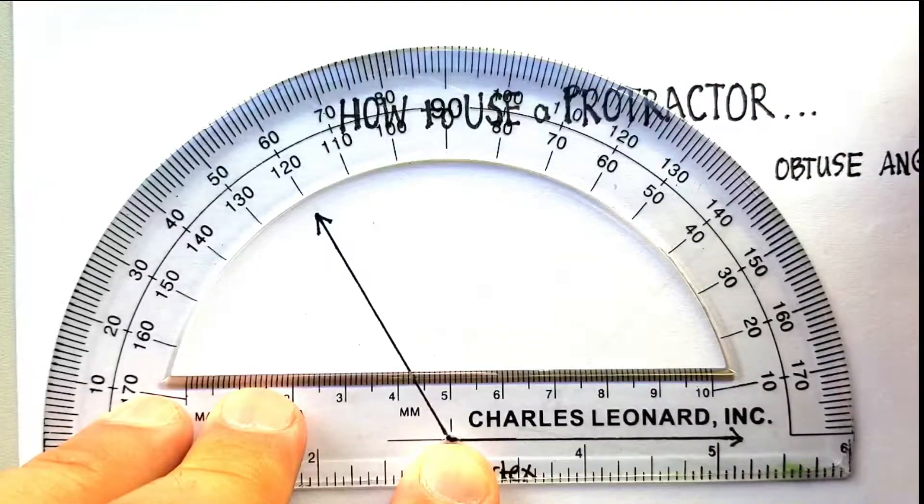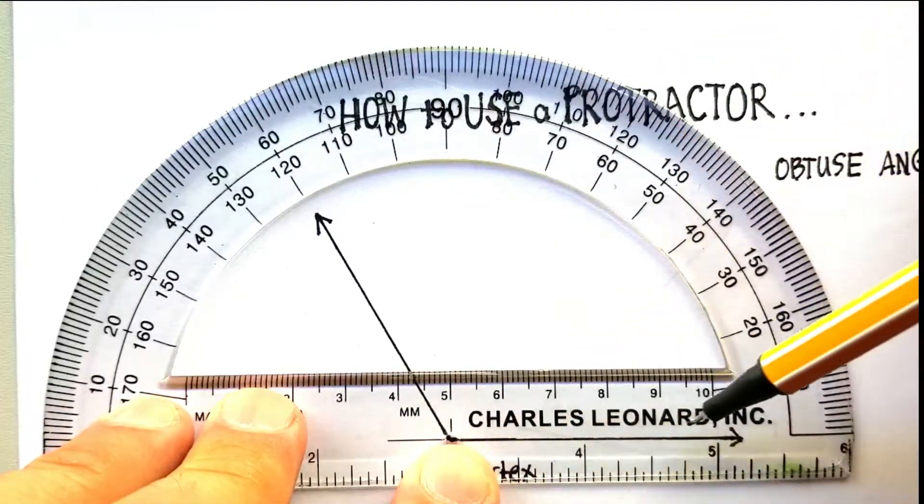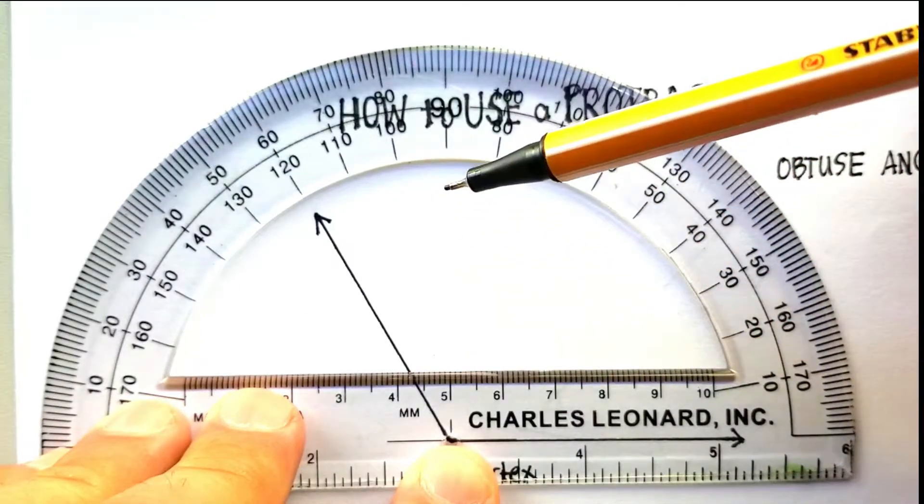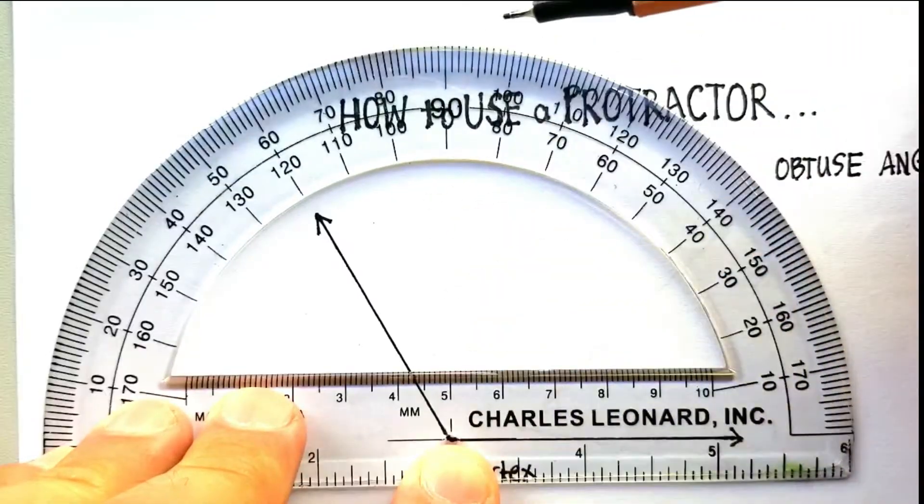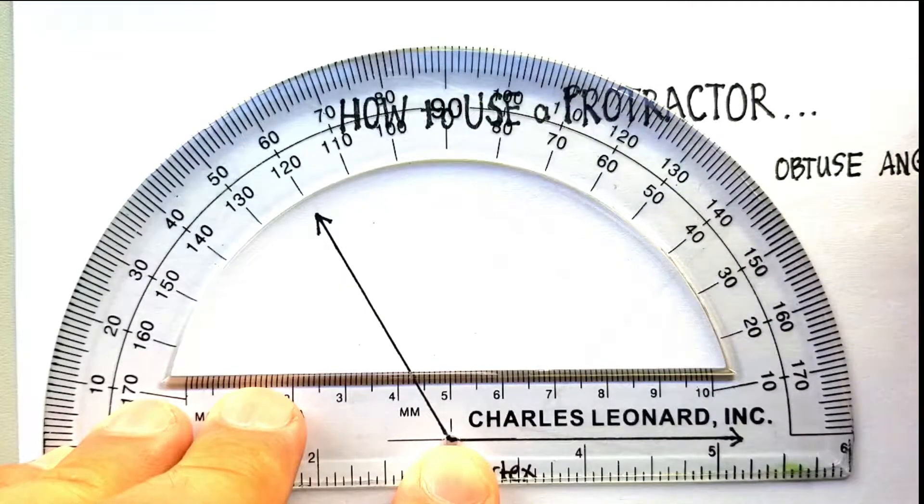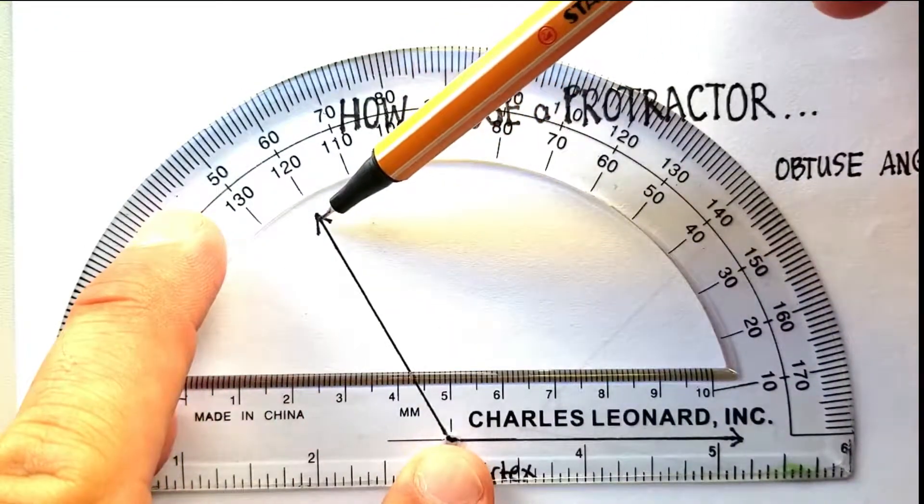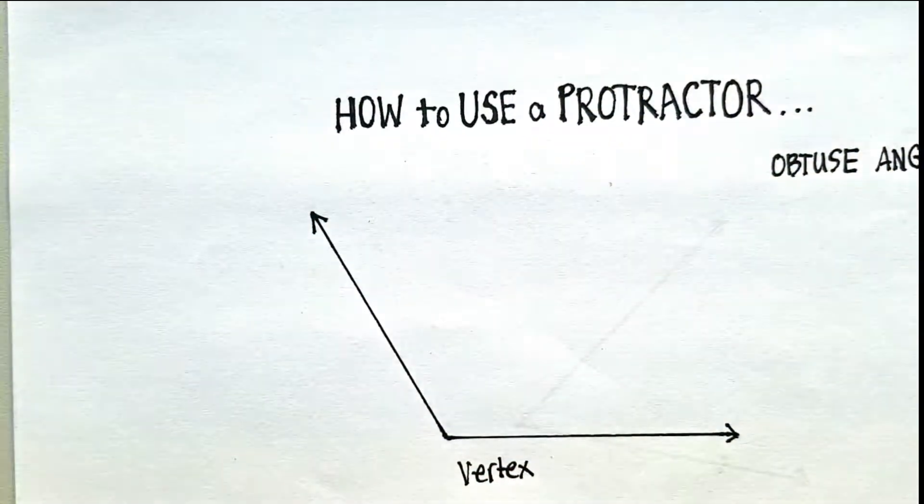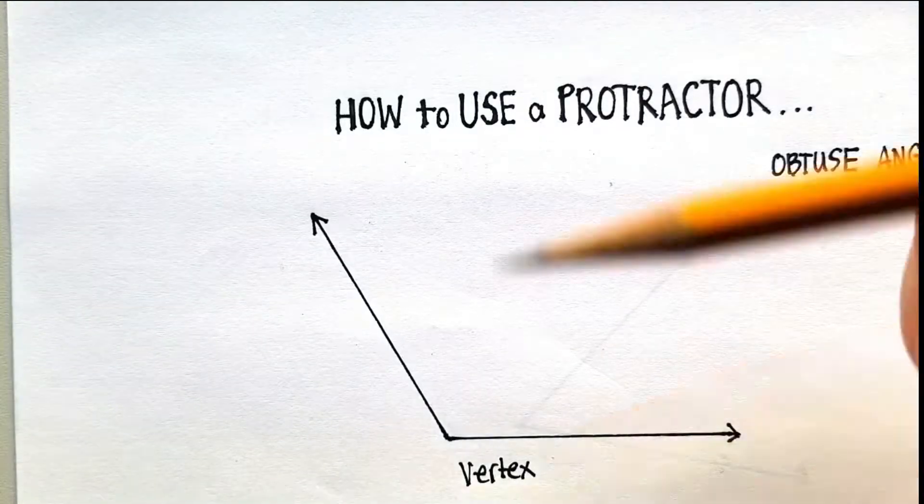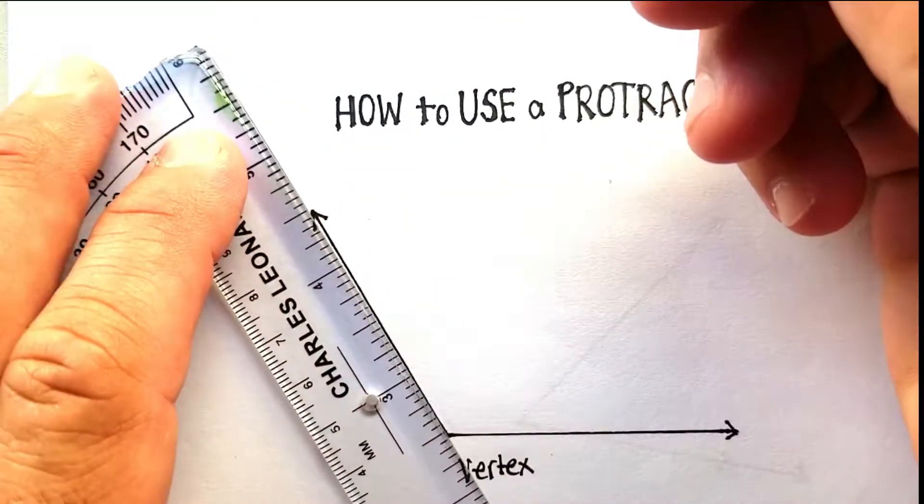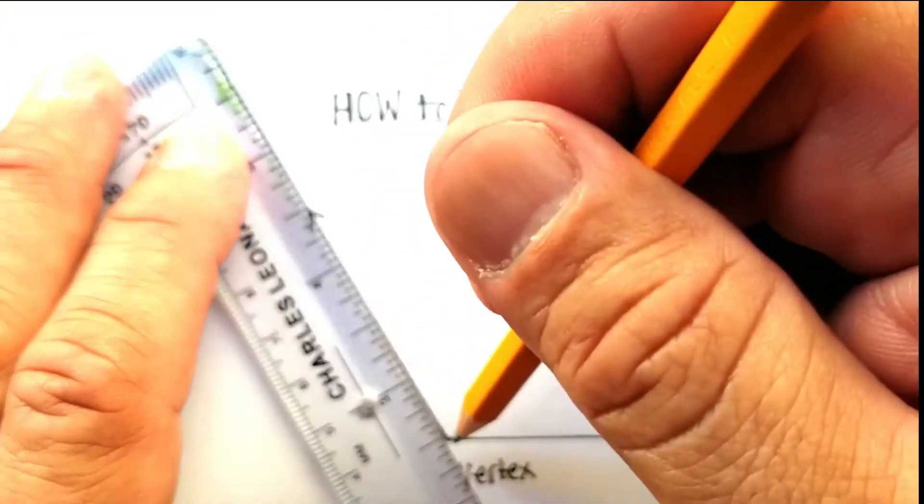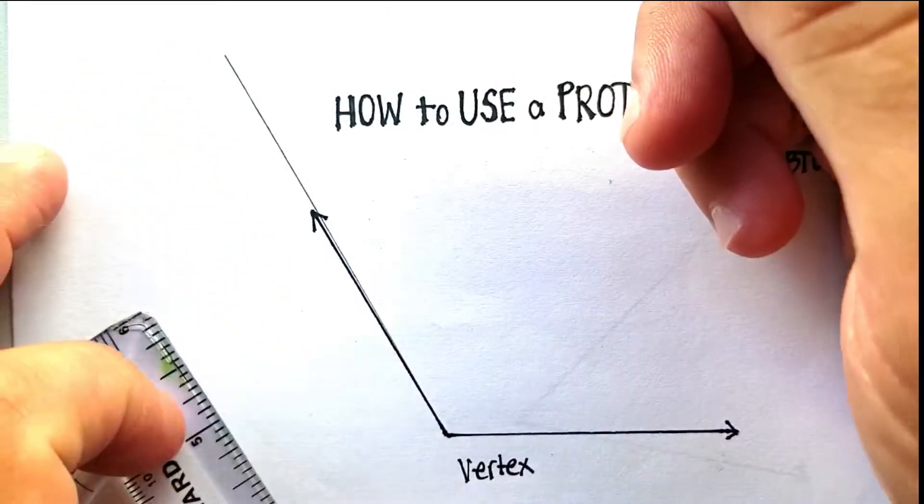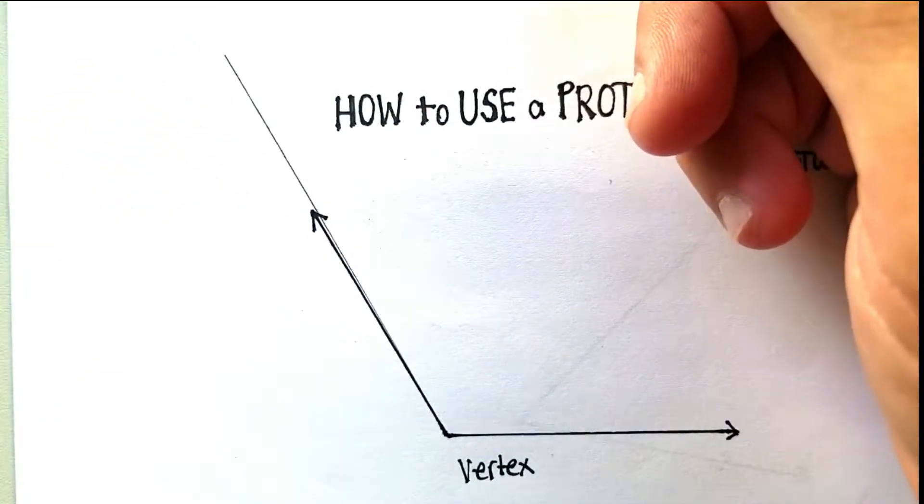Now, this is confusing for some of my students. Notice that we said this is an obtuse angle, which means we need to be able to read something greater than 90 degrees, right? So, when you go up here and see where the arrow is pointing. And if you can, this is what I would strongly suggest. If you can extend that line so that it goes all the way through the protractor, that would probably be very helpful. So, I'm just going to go all the way up there. Not exactly perfect, but close.